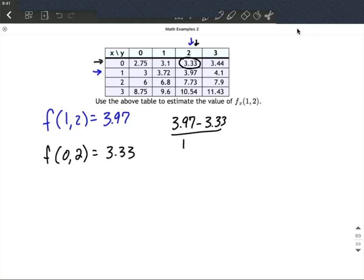So 1 was associated with 3.97 minus 0 associated with 3.33. And then as we reduce this down, we're going to get 0.64 divided by 1, or 0.64.